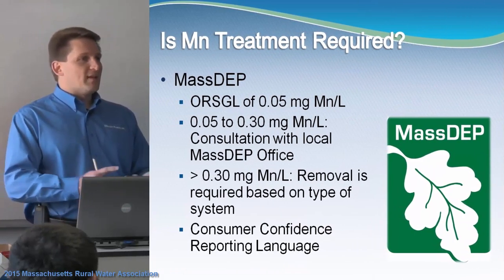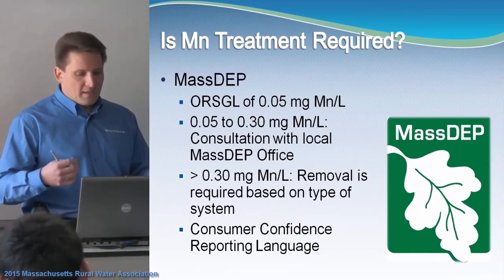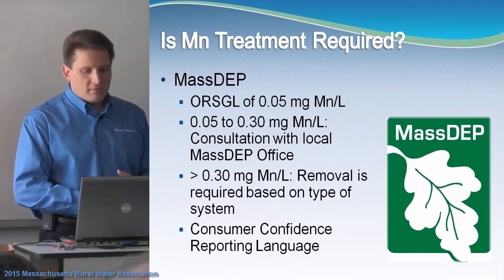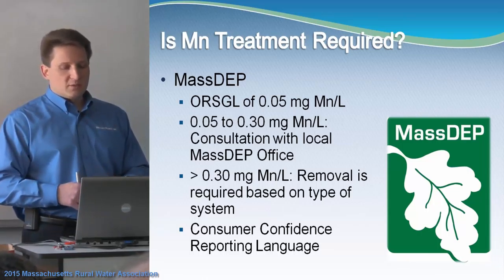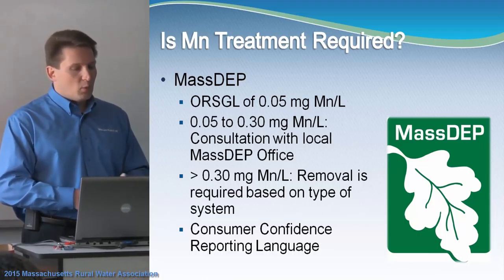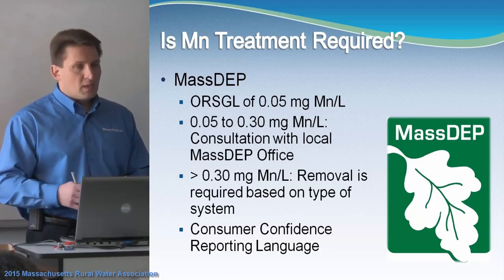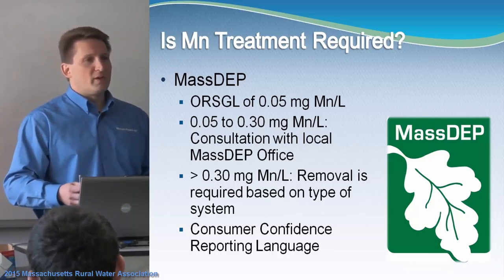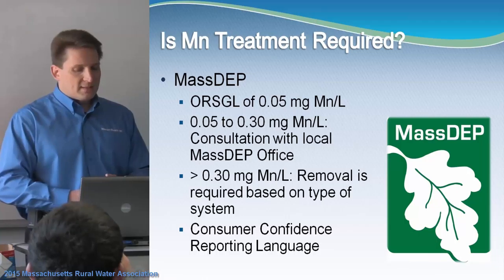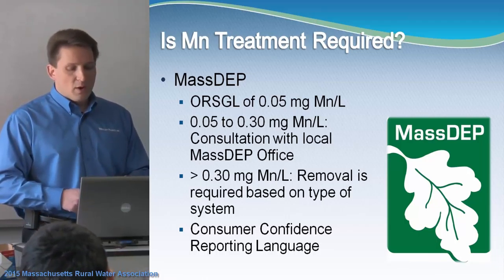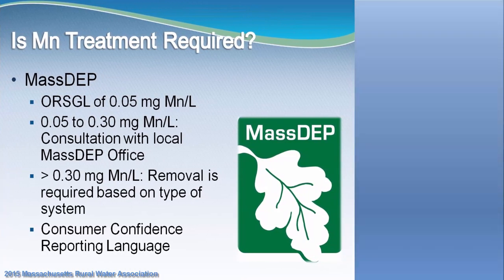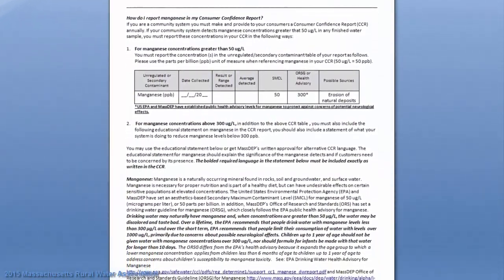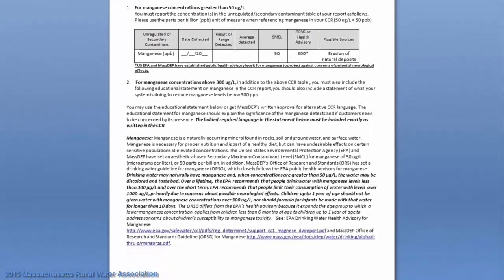From the DEP's perspective, they have the Office of Research Standards guidelines with a level of 0.05 milligrams per liter. If you have manganese in your treated water between 0.05 and 0.3, you'll have to consult with your local MassDEP office. If it's over 0.3, you will probably have to remove it, depending on the type of system. The DEP has also been asking utilities to include language about manganese and its concerns in the Consumer Confidence Report.